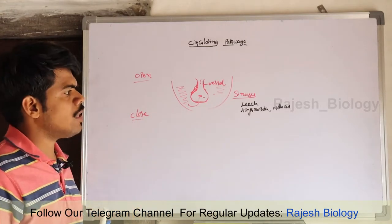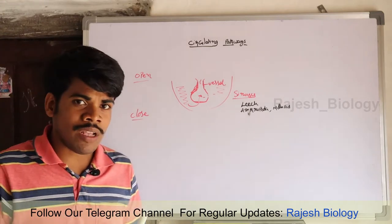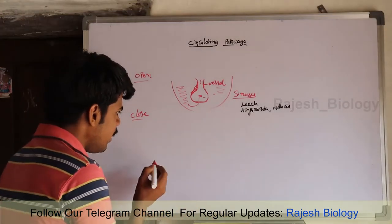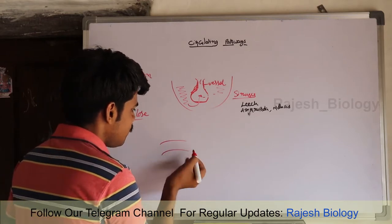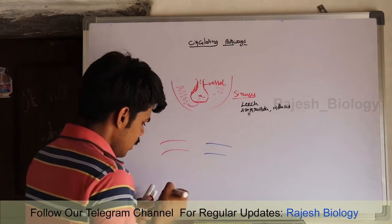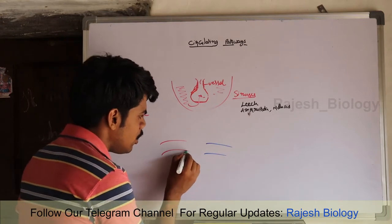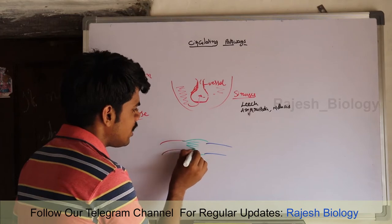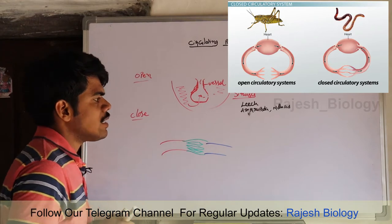In the closed type of circulatory system, the blood always flows within the blood vessels. The blood moves from the heart into the arteries and enters into the venules. There are small blood capillaries which connect the arteries and venules — these are known as capillaries. This capillary system is absent in the open type of circulatory system.